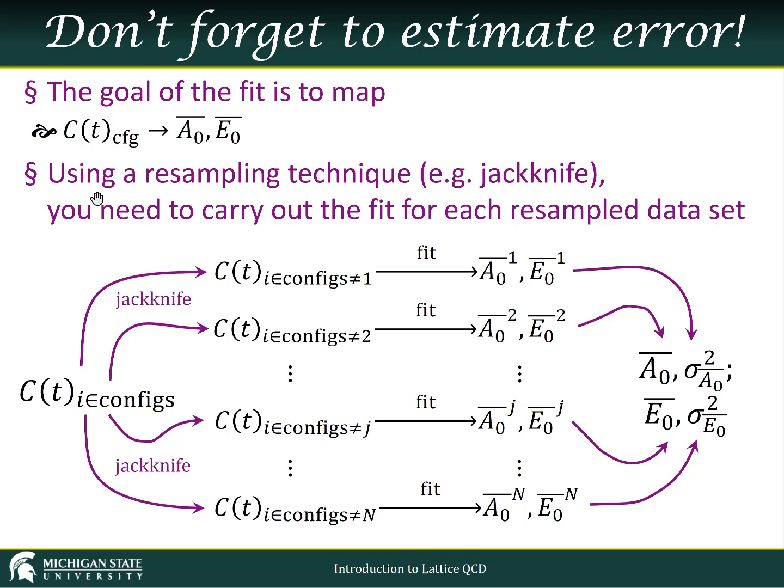Using a resampling technique, for example, the jackknife, you'll have to carry out this fit for each of the resampled data sets. So here we take our correlators on each of our configurations, we use the jackknife procedure in order to make a resampled data set. So we take our configurations, we knock out the first one, we knock out the second one, yada, yada, yada, for all of the different configurations. Then we fit to this set, and we get some prediction for our amplitude, we get some prediction for our energy. And we get that same prediction for each of the members of our resampled data set.